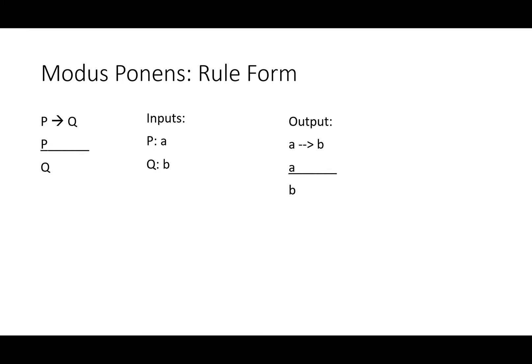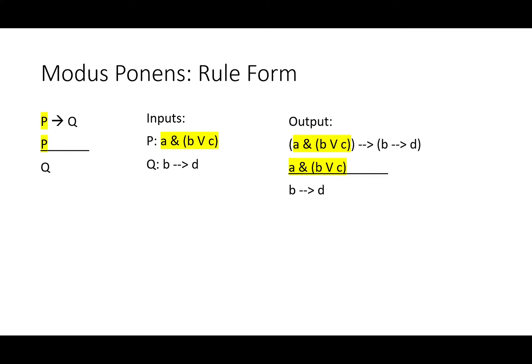For example, A goes in for P and B for Q, so we get: if A then B, A, therefore B. But we can use much more complicated sentences as well. Here, 'A and either B or C' follows P, and 'if B then D' follows Q. This sentence becomes both the antecedent of the conditional and the second premise, while 'if B then D' becomes the consequent of the conditional and the conclusion of the whole argument. Whatever you substitute for P or Q, no matter how long or short, if it follows the same format as modus ponens, you can use this rule to derive the consequent of a conditional.